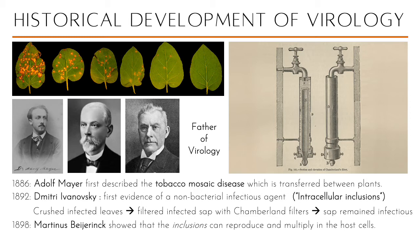After six years, Martinus Beijerinck showed that the inclusions he found inside cells could reproduce and multiply in the host cells — they weren't just living there, they were multiplying. He coined the term 'virus,' the Latin word for poison, because it appeared to be poisoning those other plants.